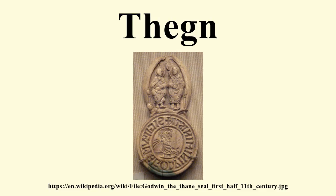Growing class: the increase in the number of Thanes produced in time a subdivision of the order. There arose a class of king's Thanes, corresponding to the earlier Thanes, and a larger class of inferior Thanes, some of them the Thanes of bishops or of other Thanes. A king's Thane was a person of great importance, shown by the Latin translation of the word as comes. He had certain special privileges: no one save the king had the right of jurisdiction over him, while by a law of Cnut we learn that he paid a larger heriot than an ordinary Thane.